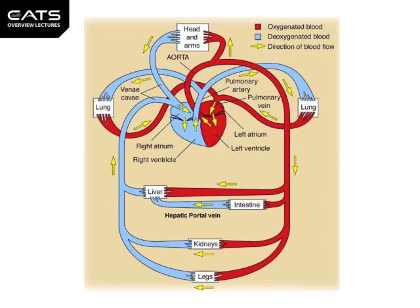We'll start off with the right atrium, where venous blood is pooling in. When the heart squeezes, this goes into the right ventricle and is then pushed up via the pulmonary artery to the lungs.